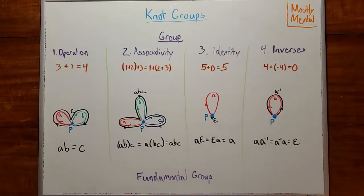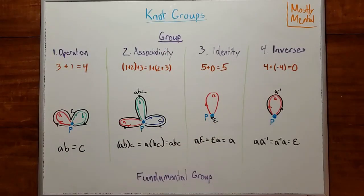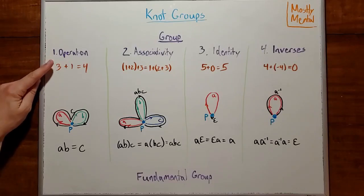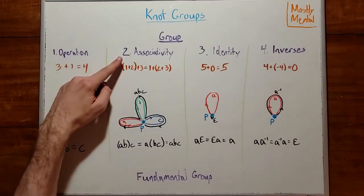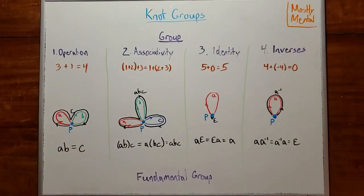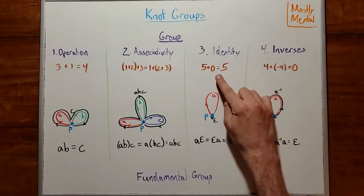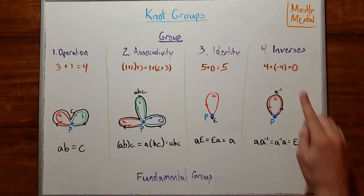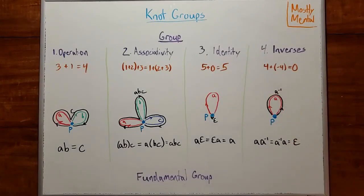In order to bring algebra into the mix, we need to find some sort of structure in these paths. And the most natural choice of structure is what's known as a group. To be a group, a set needs to have an operation to combine elements, like addition or multiplication. This operation needs to be associative, which means you can regroup the elements however you want without changing the result. There needs to be an identity, which is a do-nothing element, like adding zero or multiplying by one. And there need to be inverses, so some way to undo every element, like adding a negative or multiplying by reciprocal.